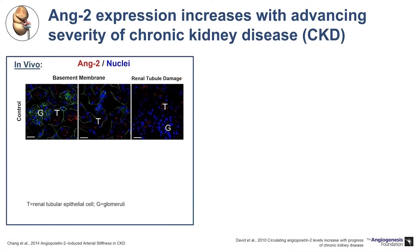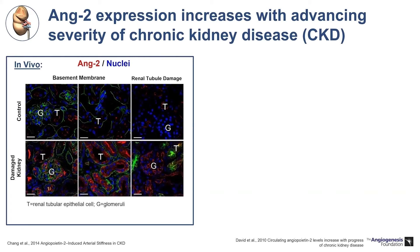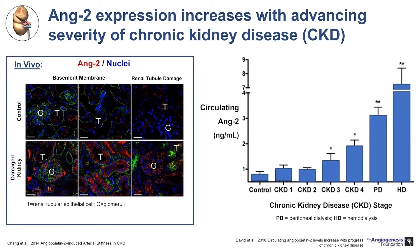ANG2 levels are also found to be associated with kidney disease. In this in vivo experiment, a healthy control kidney of a mouse shows ANG2 stained in red is barely visible and glomerular architecture is normal. However, in a mouse model with renal damage mimicking chronic kidney disease, there is dramatically disrupted vascular architecture, and ANG2 is highly stained. In humans, circulating levels of ANG2 are low in healthy controls but increase with the severity of chronic kidney disease, reaching their highest levels when peritoneal dialysis or hemodialysis are needed.